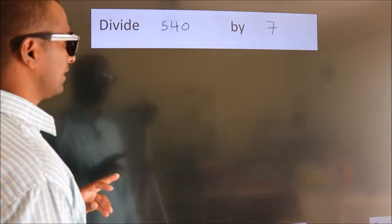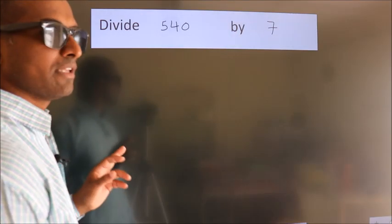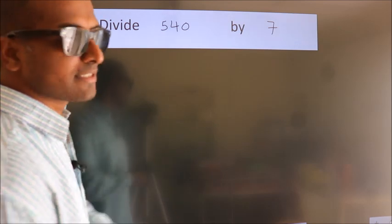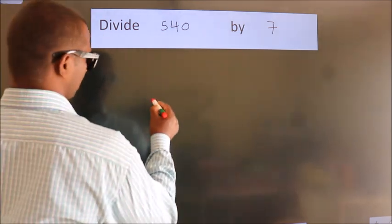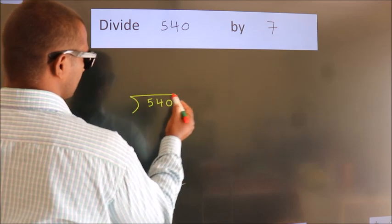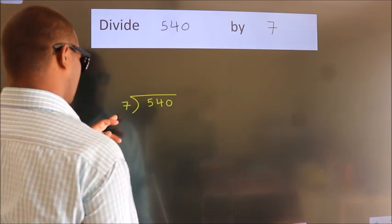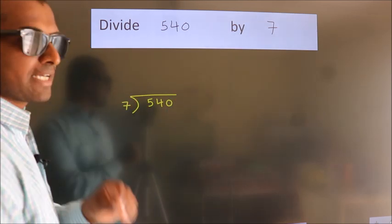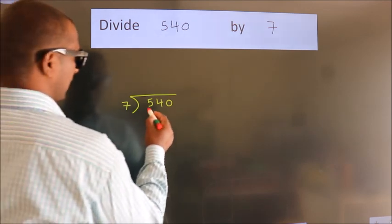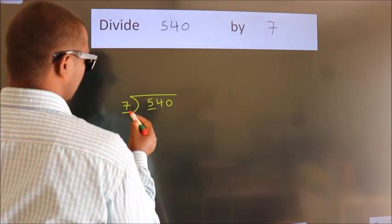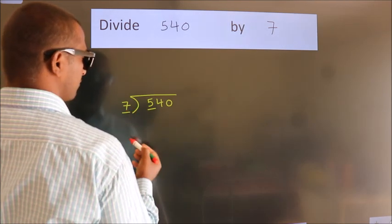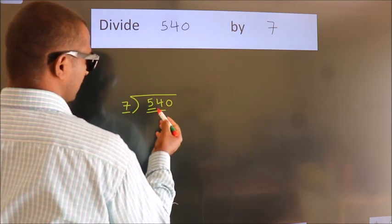Divide 540 by 7. To do this division, we should frame it in this way: 540 here, 7 here. This is your step 1. Next, here we have 5, here 7. 5 is smaller than 7, so we should take two numbers: 54.